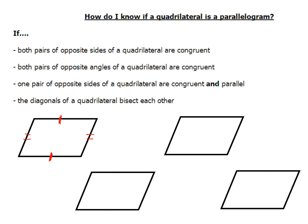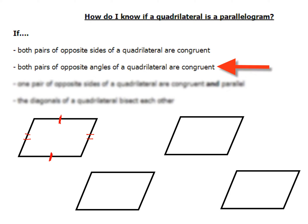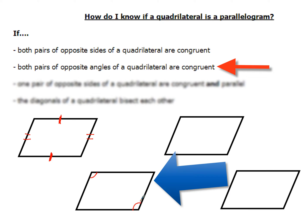A second way is to show that both pairs of opposite angles in the quadrilateral are congruent. So this angle right here, whatever number that is, is going to be the same thing as this angle right here.